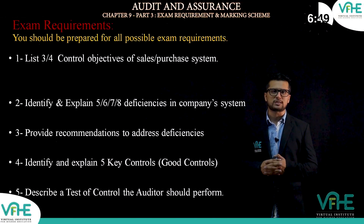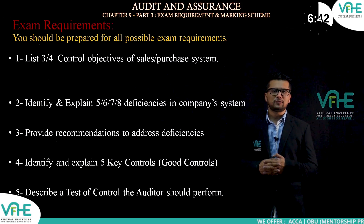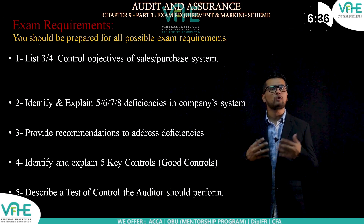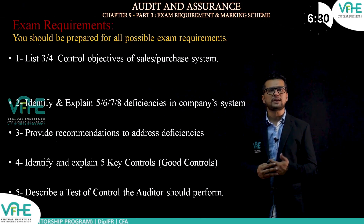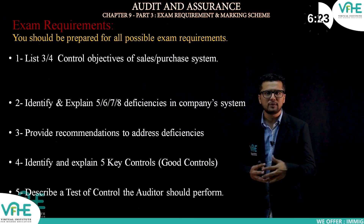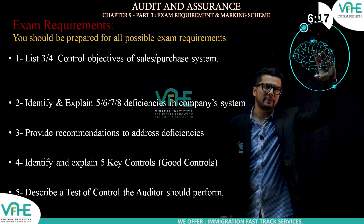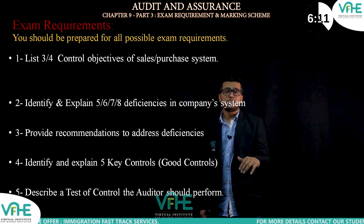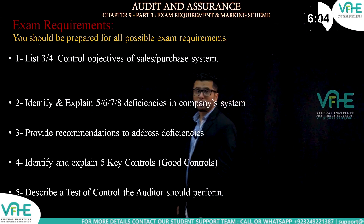Let's explore the exam requirements for internal control systems. Overall, there are five different types of exam requirements. The first could be to list or explain three or four control objectives — for example, of the sales system, purchase system, bank and cash system, or inventory system. This first requirement is a knowledge-based requirement and has nothing to do with the scenario of the question.